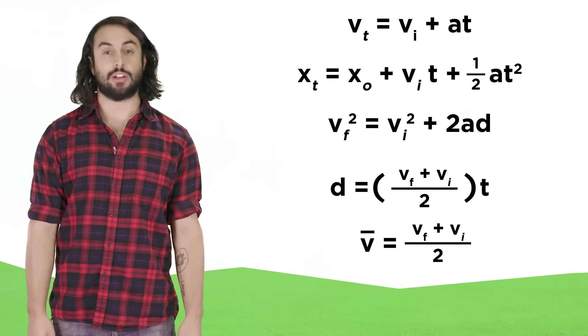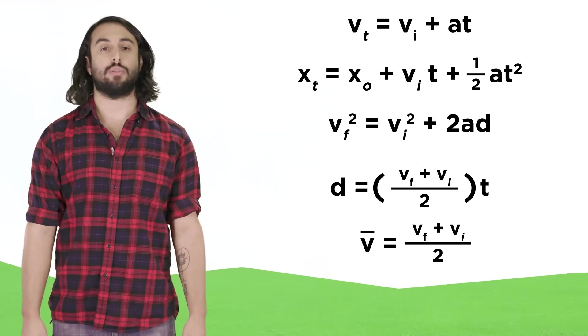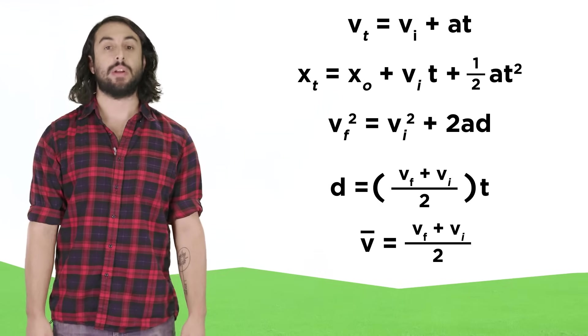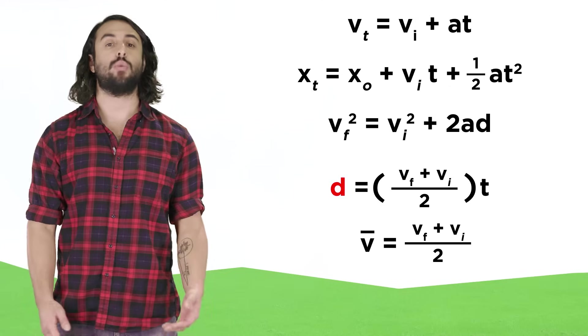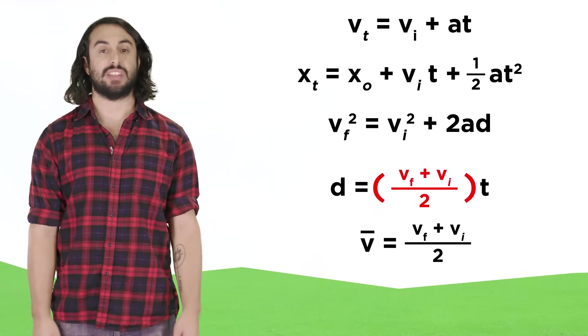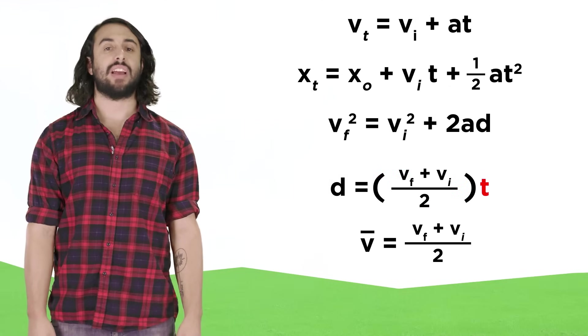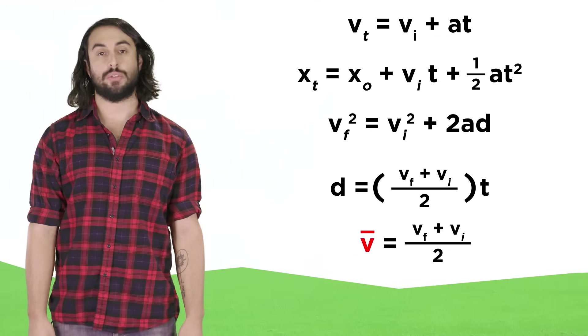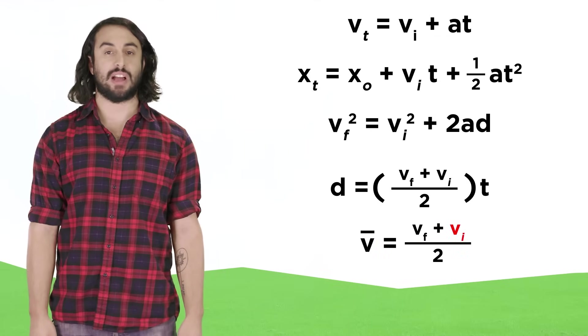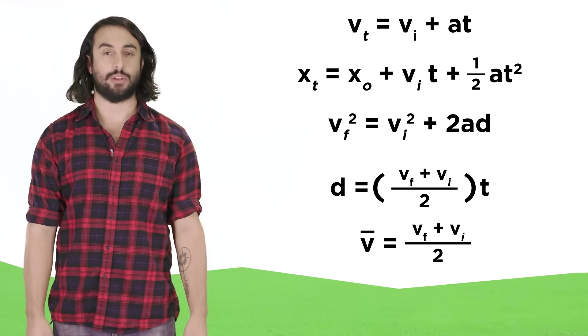Other supplemental equations include these two, which are easily derived from simple definitions, which state that position is equal to the average velocity times the time interval, and that the average velocity is equal to final velocity plus initial velocity over two, which is the definition for any average.